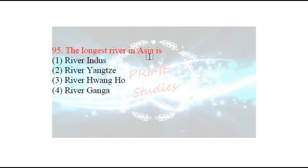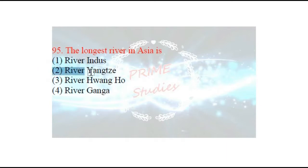Next question: the longest river in Asia is which? Asia mein sabse lambi nadi kaun hai? The options are: river Indus, Yangtze, or Ganga. The answer is river Yangtze — Yangsi nadi. This river originates from the Tibetan Plateau and falls into the East China Sea.